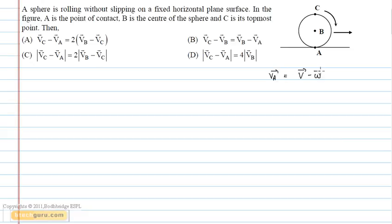Where V is the velocity of the center of mass, omega is the angular velocity, and r is the distance of the point from the center.